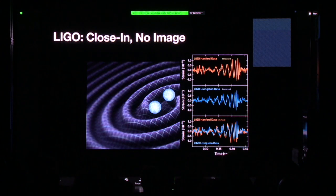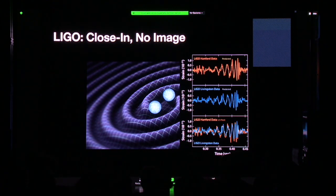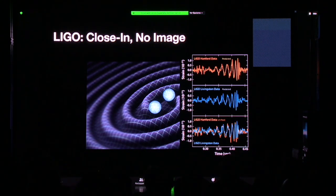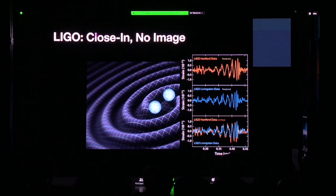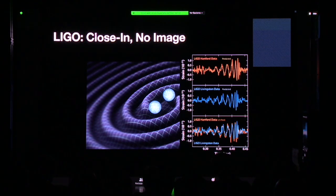Another way scientists have begun to look at black holes is by looking at the way they disturb space itself — the way they create waves in space. The experiment LIGO has bases in Louisiana, Washington State, Italy, and new sites in India and Asia. These stations have very sensitive giant mirrors which move as space is thrown into disturbance when two black holes — the size of a city, products of stellar collapse — merge. But there are no pictures when black holes are close together.